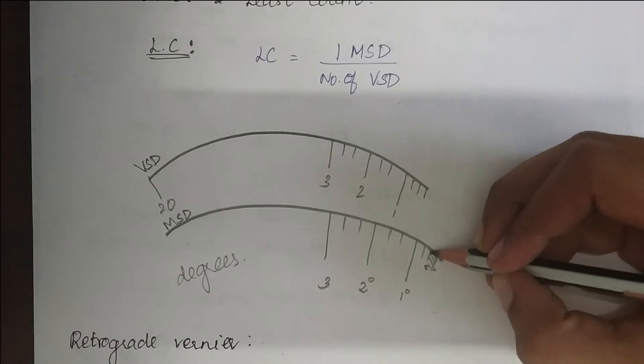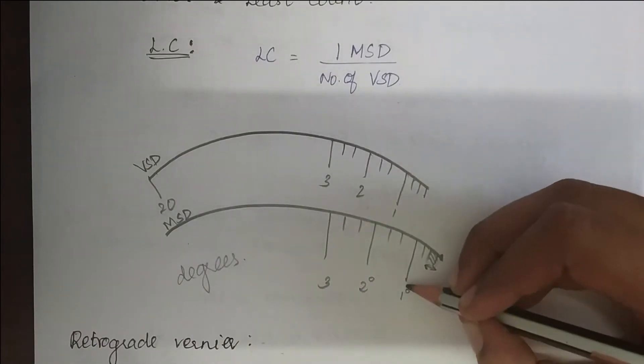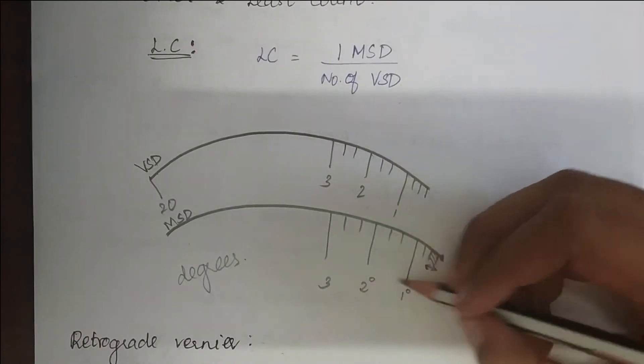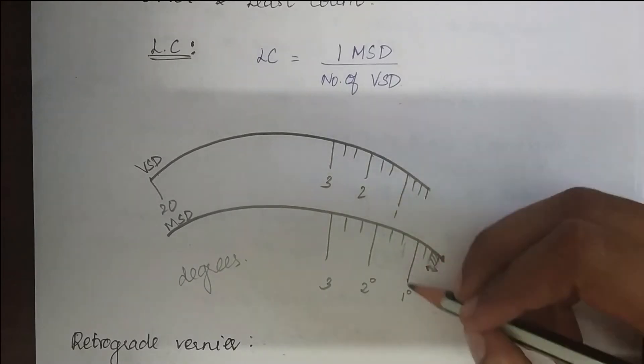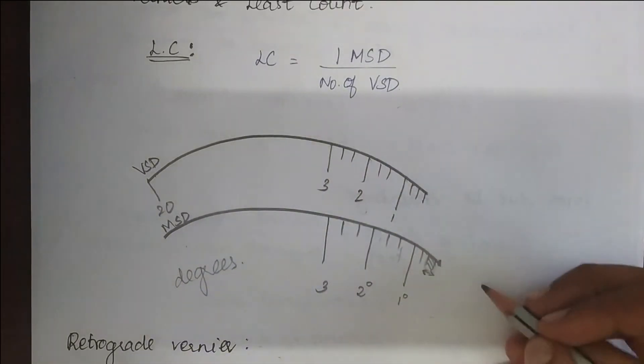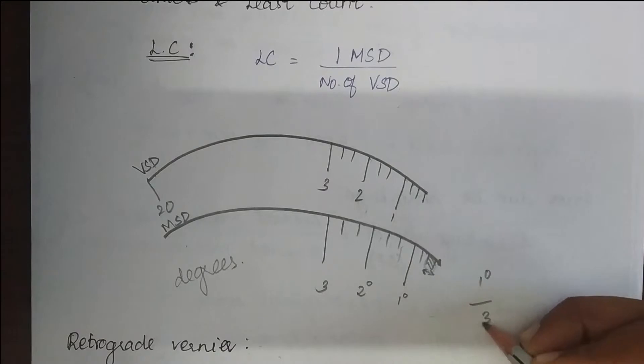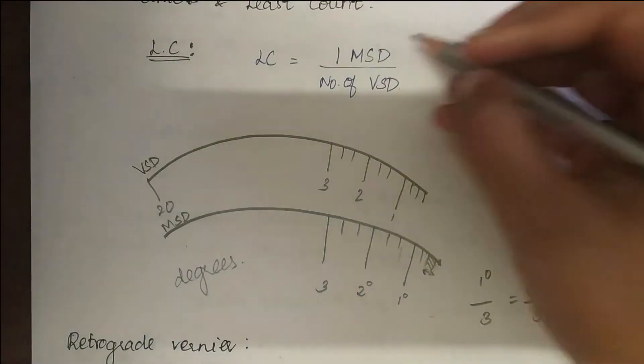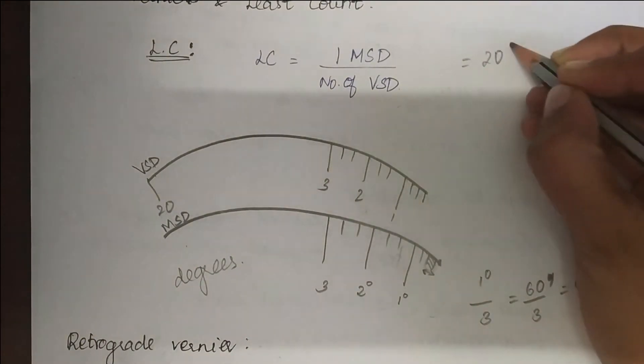So how will we find the value of this part? You know that it is one degree and each degree is divided into three parts. So one main scale division is equal to one degree divided by three, which means 60 minutes divided by three, which gives you 20 minutes. So one main scale division is 20 minutes.